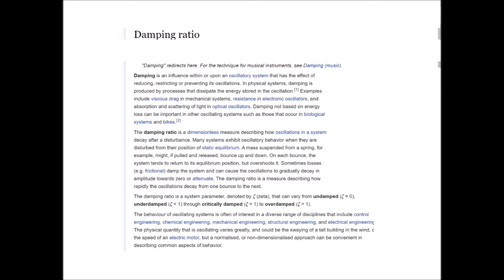Damping ratio. Damping is an influence within or upon an oscillatory system that has the effect of reducing, restricting, or preventing its oscillations. In physical systems, damping is produced by processes that dissipate the energy stored in the oscillation. Examples include viscous drag in mechanical systems, resistance in electronic oscillators, and absorption and scattering of light in optical oscillators.